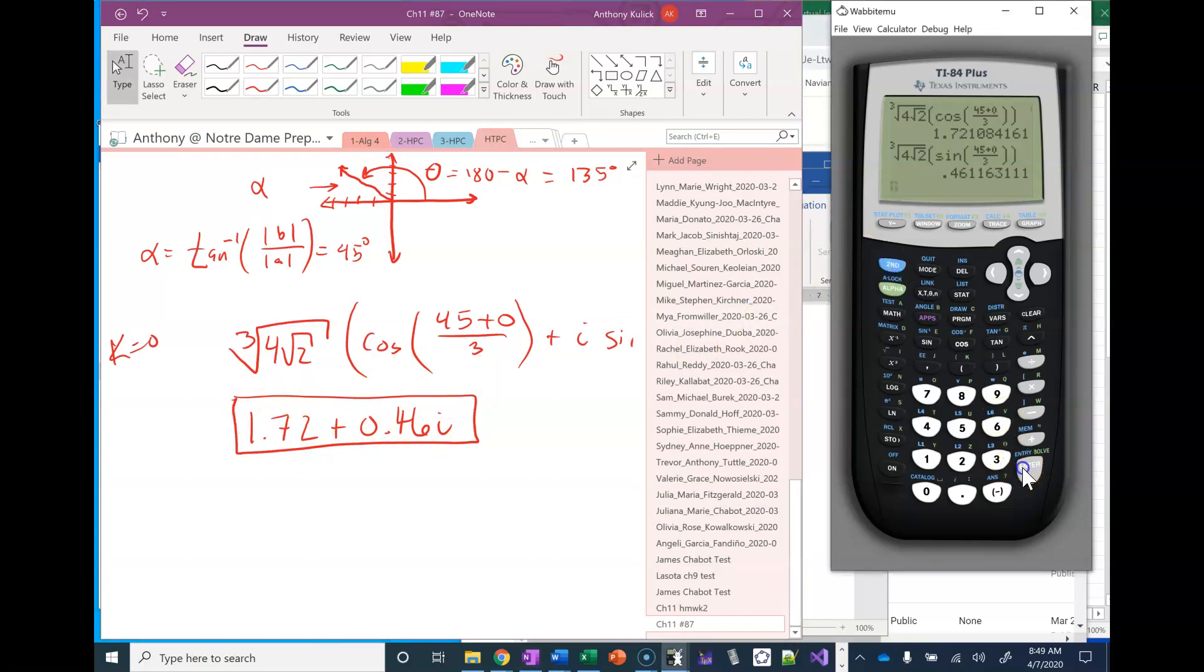Now if I go back and edit this, I'm going to press second and enter twice. That'll retrieve for me the cosine one. I'm just going to go back and change this 0 into a 360. So that's going to give me negative 1.26 plus, and I'm going to go back and press second and enter two times. That'll get me back to the sine one. I'm going to go and change this 0 to a 360. So that gives me positive 1.26i.